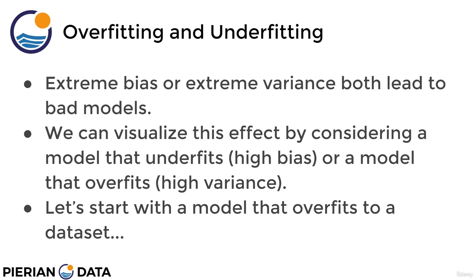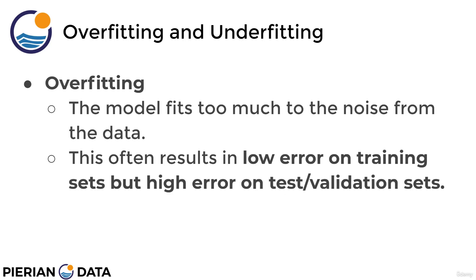Let's start with a model that overfits to a data set. Overfitting is when the model fits too much to the noise or variance from the data. This often results in low error on training sets, but high error on test or validation sets. This is why overfitting can sometimes be a little hard to catch, because you may think your model is performing really well when in fact it's only performing well on the training set instead of performing well on unseen data. So it's overfitting, meaning it has too much variance.